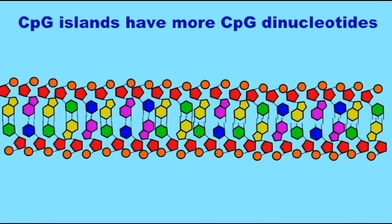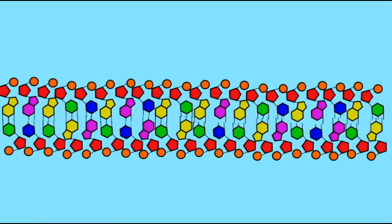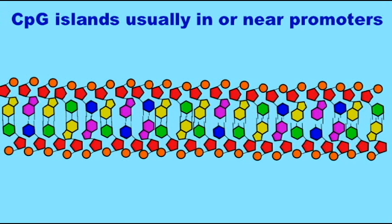A CpG island is defined as an area where there are at least 200 to 500 nucleotides, a higher than normal concentration of cytosine and guanine, and a higher than predicted occurrence of these CpG dinucleotides.